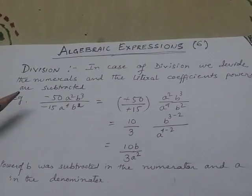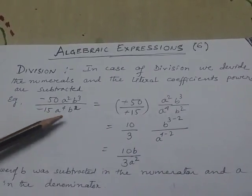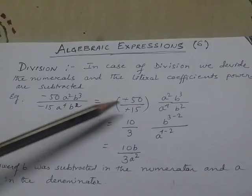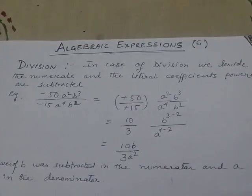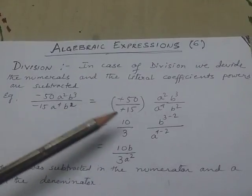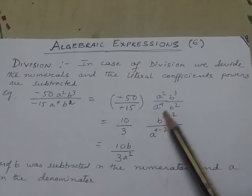I am showing an example: -50a²b³ divided by -15a⁴b². Let me divide -50 by -15. Minus and minus cancel, so 50÷15 equals 10/3. The numerical part is divided. Now a²b³ by a⁴b².